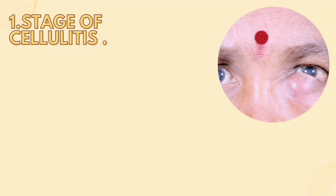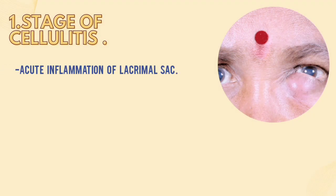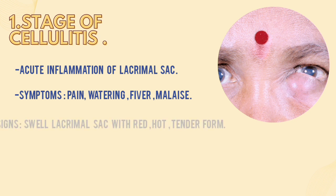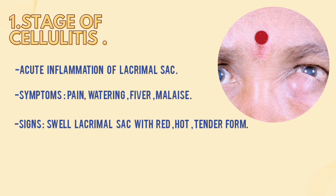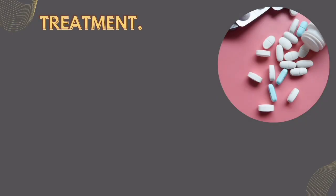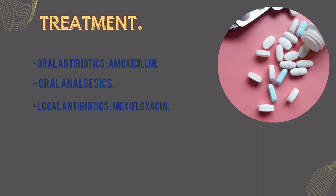Firstly, in the stage of cellulitis, there is an acute inflammation of the lacrimal sac. Patients will present with symptoms like pain, watering, fever, malaise, and signs of swollen lacrimal sac with red, hot, and tender forms. Usually in this stage, treatment includes oral antibiotics like amoxicillin, oral analgesics, topical antibiotics like moxifloxacin, and local heat compress three to four times daily.